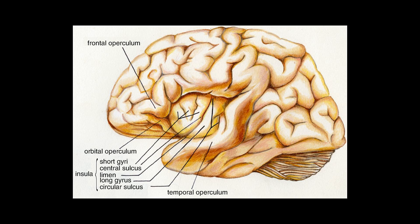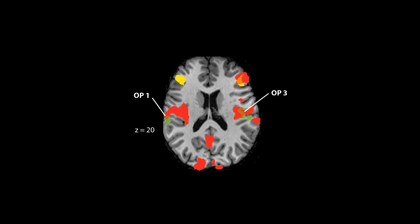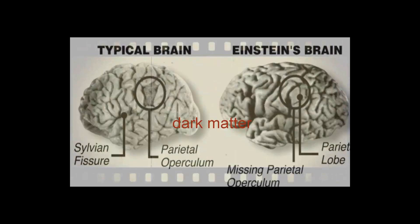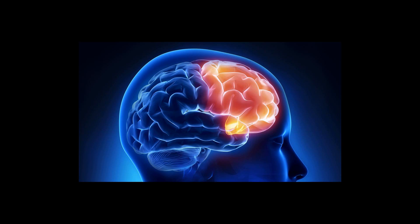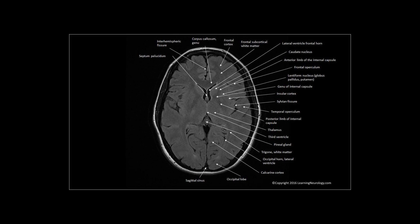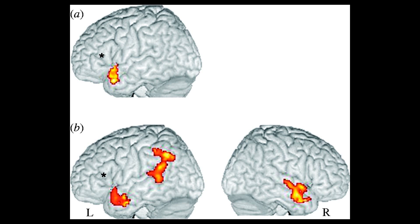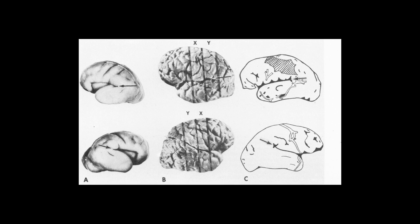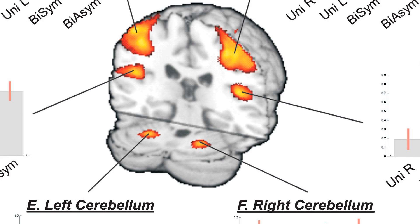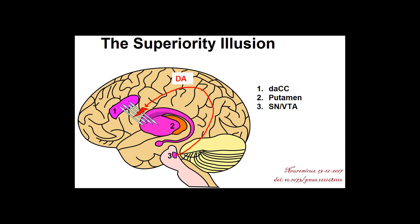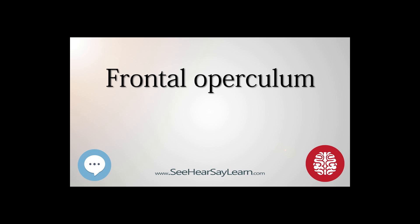Albert Einstein's brain. Opinions differ on whether Albert Einstein's brain possessed parietal opercula. Falk et al. claimed that the brain actually did have parietal opercula, while Wittelson et al. claimed that it did not. Einstein's lower parietal lobe, which is involved in mathematical thought, visuospatial cognition, and imagery of movement, was 15% larger than average. Figure 9 of Falk 2013 is a photograph of Einstein's right insula after removal of the operculum.